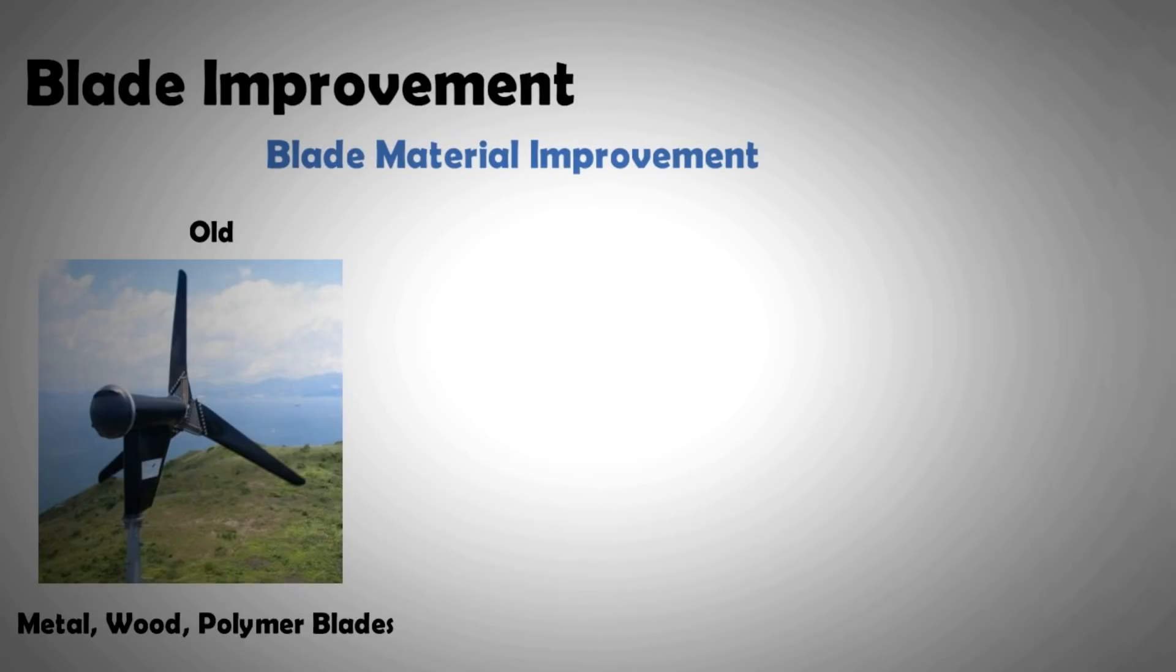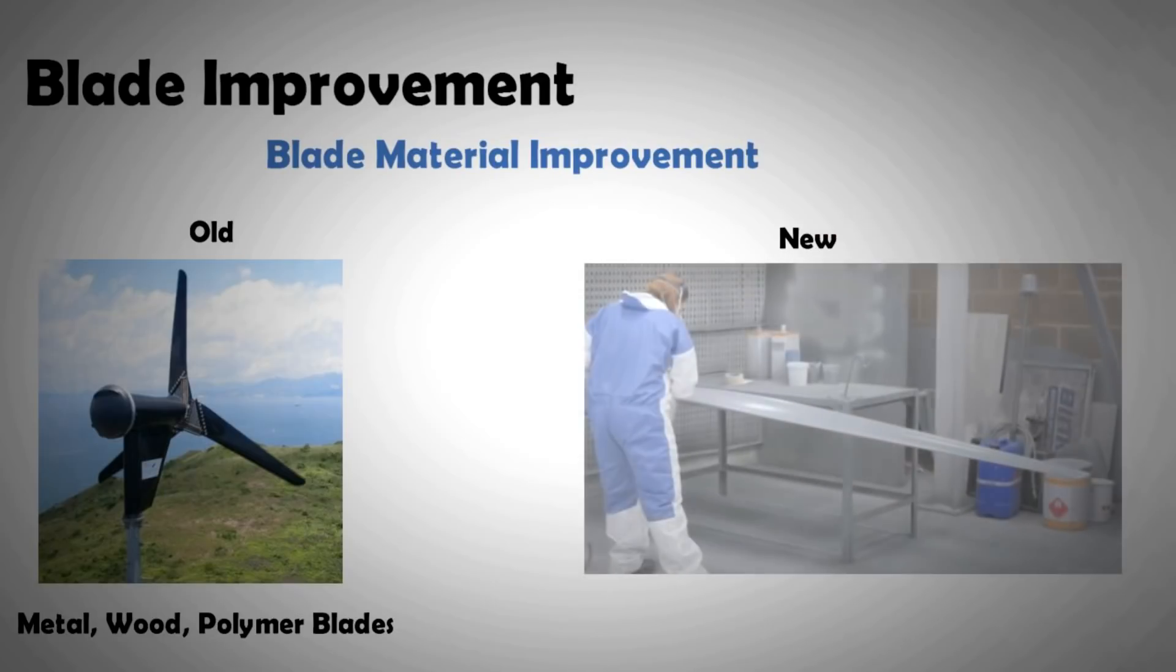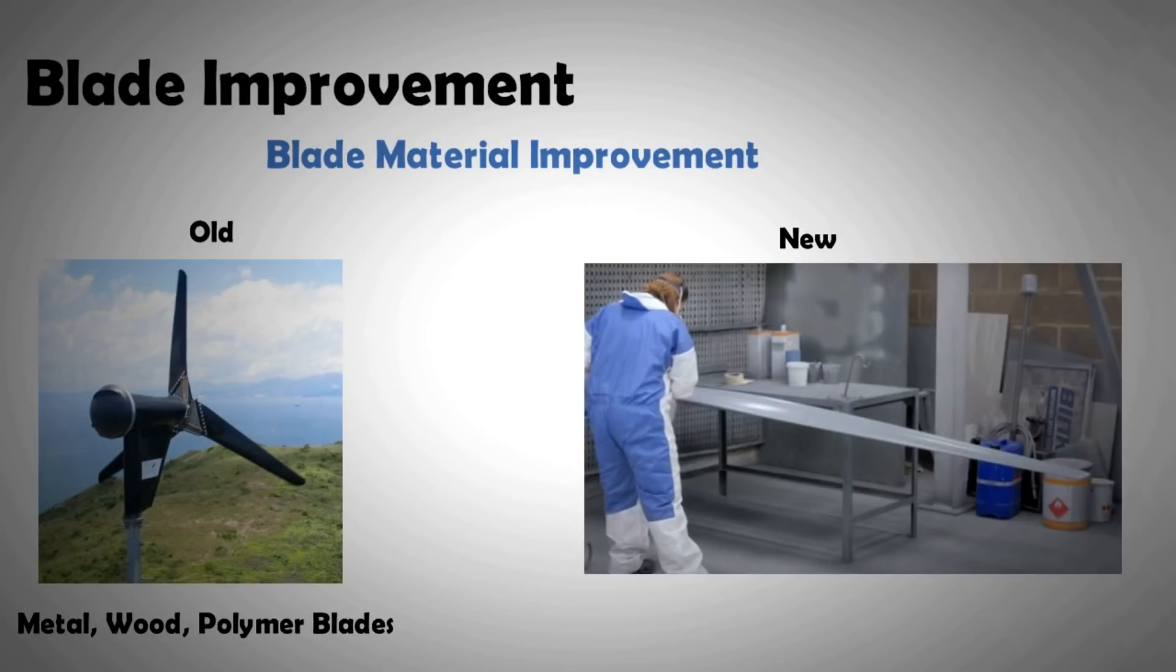Carbon or glass fiber reinforced polymer blades are becoming common in smaller turbines giving them strength and durability. Furthermore, the blade shape for smaller turbines has improved making them much more efficient and quieter. The improved blade shape also allows the turbine to get going at a lower cut-in speed.